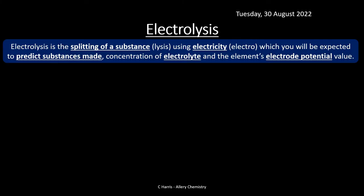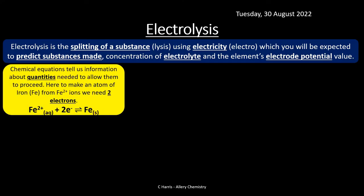Electrolysis is probably the most well-known form of electrochemistry — you may have encountered it at GCSE, or even earlier. At A-level we look at it in more detail. Electrolysis is simply the splitting of a substance using electricity: 'electro' means electricity and 'lysis' means splitting. We're expected to predict what substances are produced based on the electrolyte concentration and the electrode potential value.